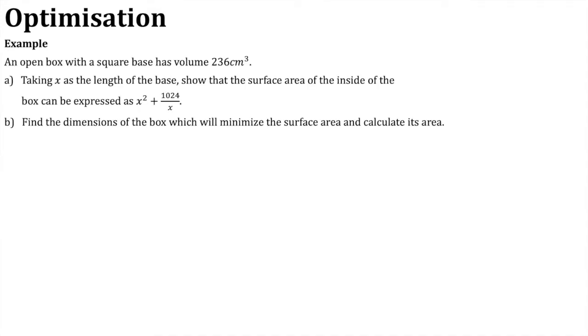We're going to look at a second example, similar to the last example, about a box, but the working is really quite different. An open box with a square base has volume 236 cubic centimeters. Taking x as the length of the base, show that the surface area of the inside of the box can be expressed as x squared plus 1024 over x. In part b, find the dimensions of the box which will minimize the surface area and calculate this area.